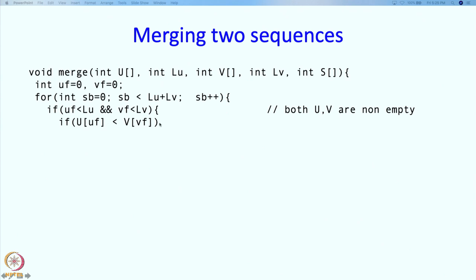We should check which one is smaller. If the U side has the smaller element than the V side, what should we do? We should move the U side element to the back of SB and we should advance the pointer, the front of UF.